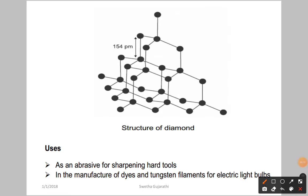Another use of diamond is in the manufacturing of dies and tungsten filaments for electric light bulbs.